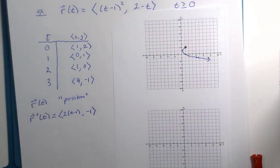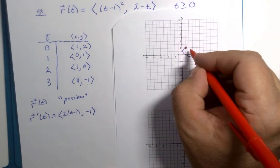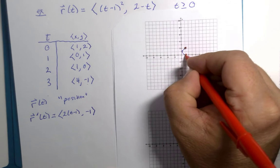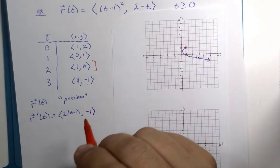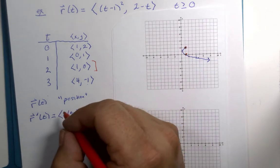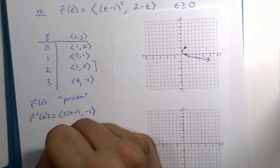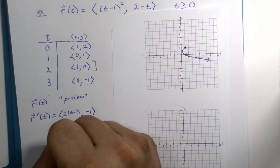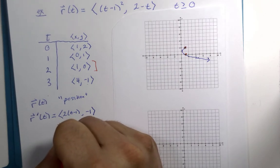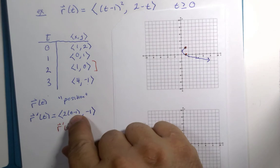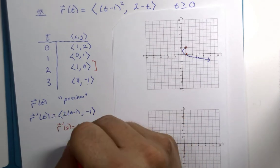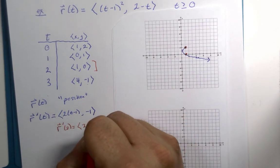And if I were to investigate at this point on the graph, right here, at time equals 2, and I were to find the derivative at time 2, let's see, 2 minus 1 is 1, 1 times 2 is 2, I would get the vector 2, negative 1.